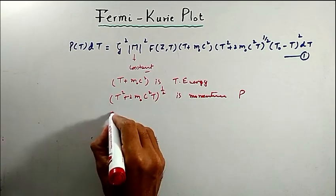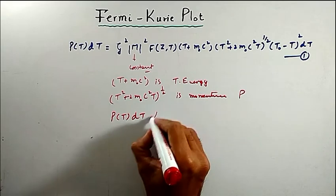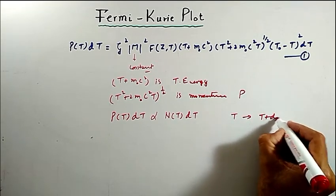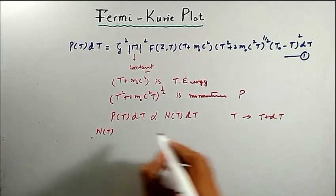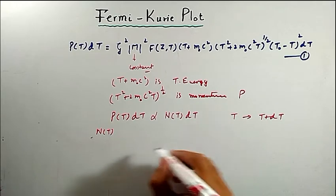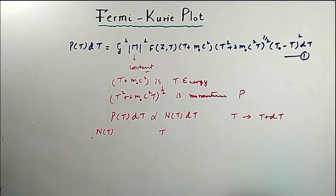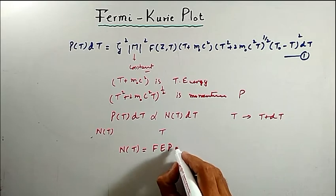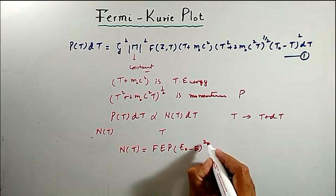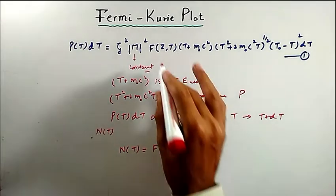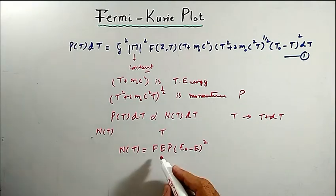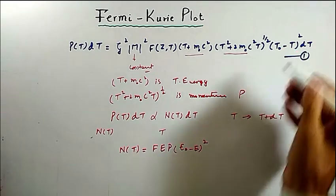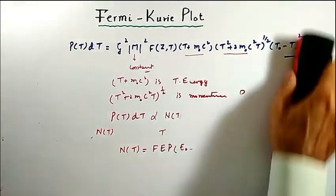In this equation, if M is regarded as constant, we can write p·T·dT as proportional to N(T)·dT within energy range T to T plus delta T. Here N(T) is a probability showing that a beta particle is emitted with energy T. In that case we can write N(T) equals f(E)·p·(E-naught minus E) squared, where f is the Fermi function, E is the energy term, p is the momentum term, and T-naught has been replaced by E-naught and T by E.